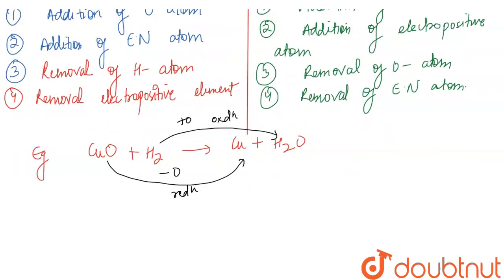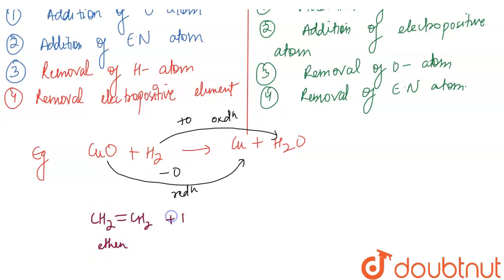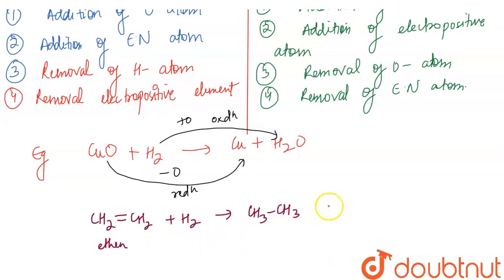Now if I talk about the next example in terms of hydrogen, suppose I have an ethene molecule. If hydrogen is added, then you will get CH3. So here you have basically addition of hydrogen, which is reduction.